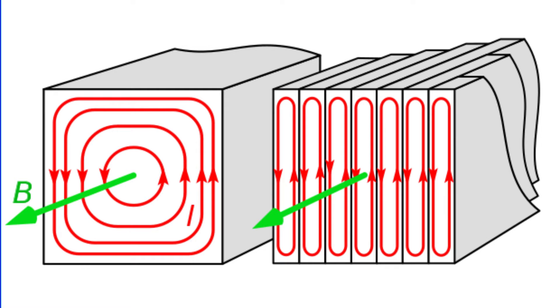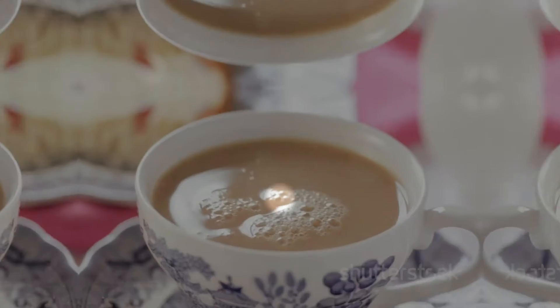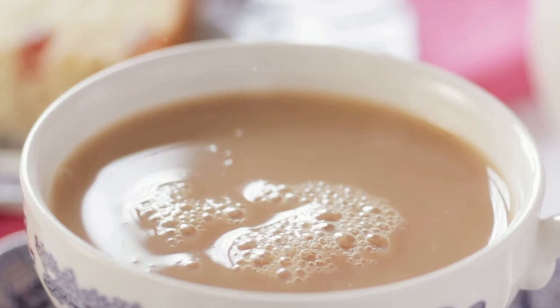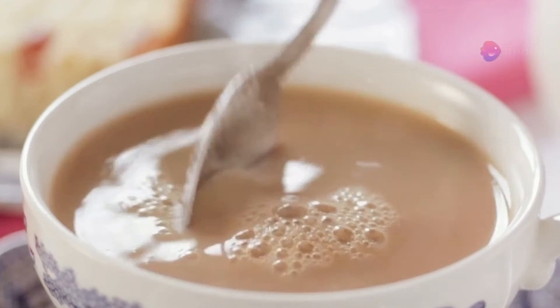Next, explore another type of magnetic loss, eddy current loss. Now, consider what happens when you stir a spoon in a cup of tea. The tea swirls around the spoon, right?